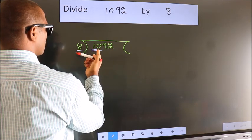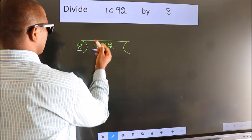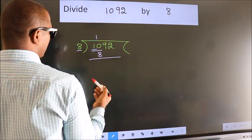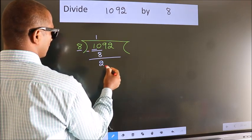A number close to 10 in the 8 table is 8 once 8. Now, we should subtract. We get 2.